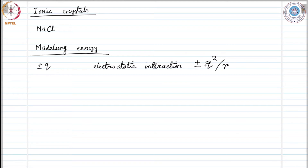This interaction is attractive for ions with opposite charges and repulsive for ions with same charges, which is obvious. The ions arrange themselves such that the attractive interaction is maximized and the repulsive one is minimized, so the total energy must be minimum — that is the way the ions arrange themselves.